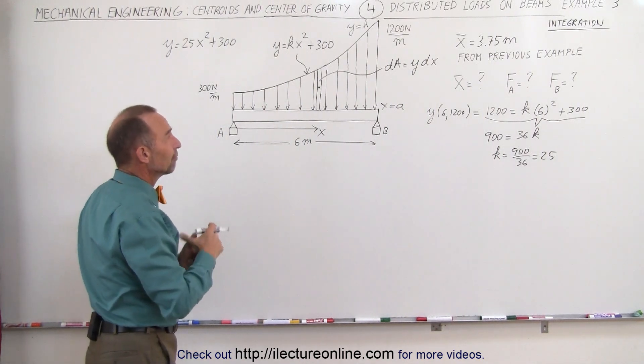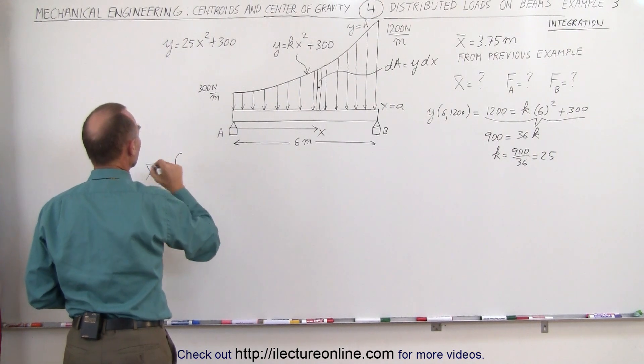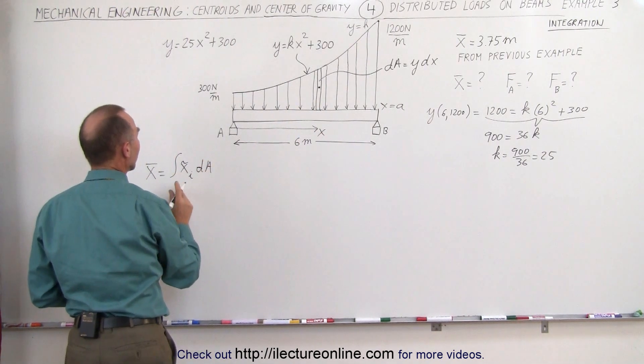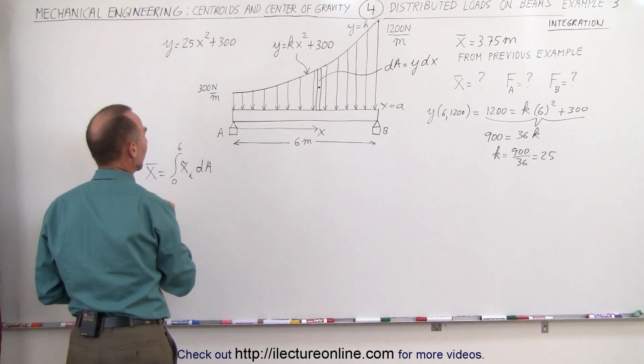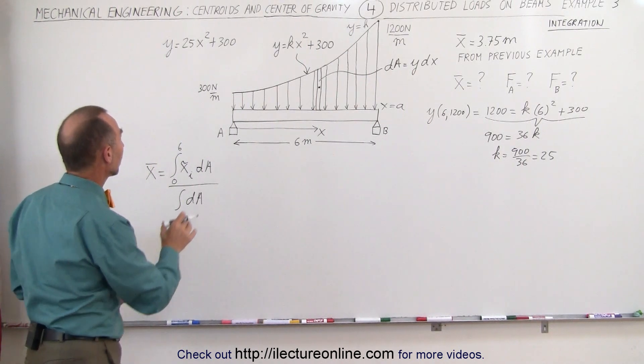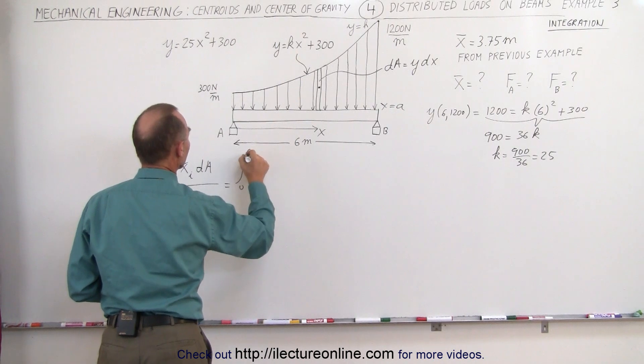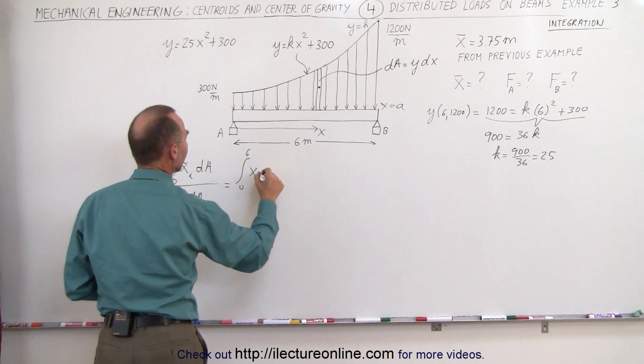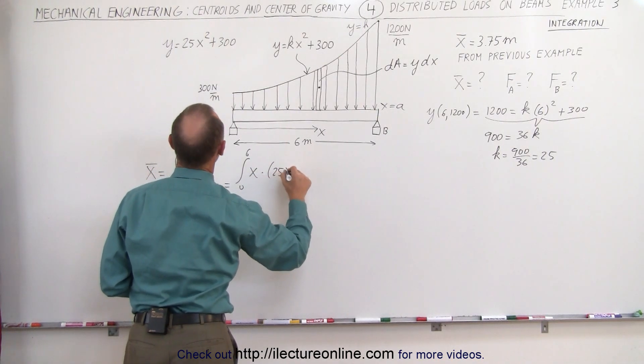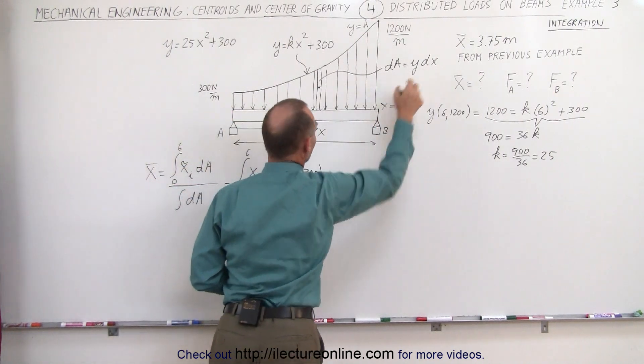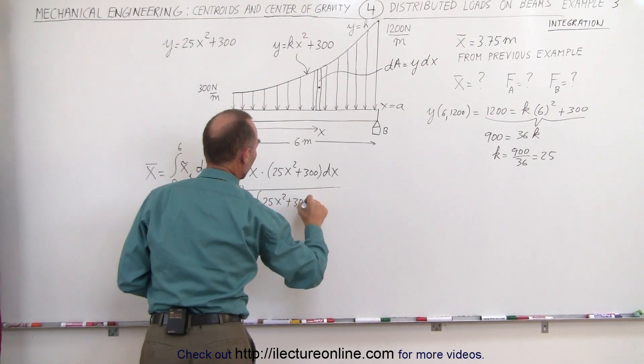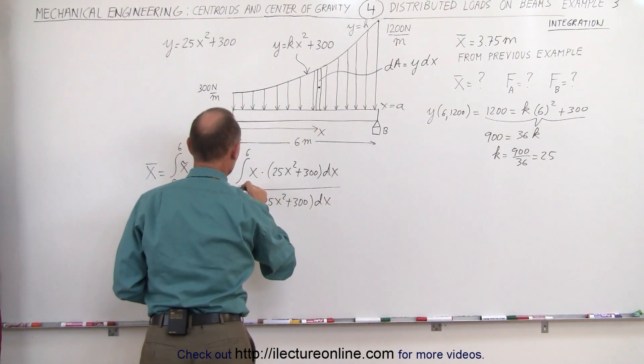Now the equation or the formula that helps us find the centroid is as follows. x-bar can be found by taking the integral of the x coordinate of the centroid of each small little piece times dA integrated from the left side to the right side which would be from 0 to 6 for the x value. Divide that by the integral of all the dA's. That means the complete load on the beam. Plugging in what dA is equal to, this is equal to the integral from 0 to 6. And also substituting for the centroid that would be x times dA. dA is y dx and y is equal to this value right here. That's times 25x squared plus 300 times dx. And then we divide that by the integral of all the dA's. Therefore on the denominator we get 25x squared plus 300 times dx. And the limits are also from 0 to 6.